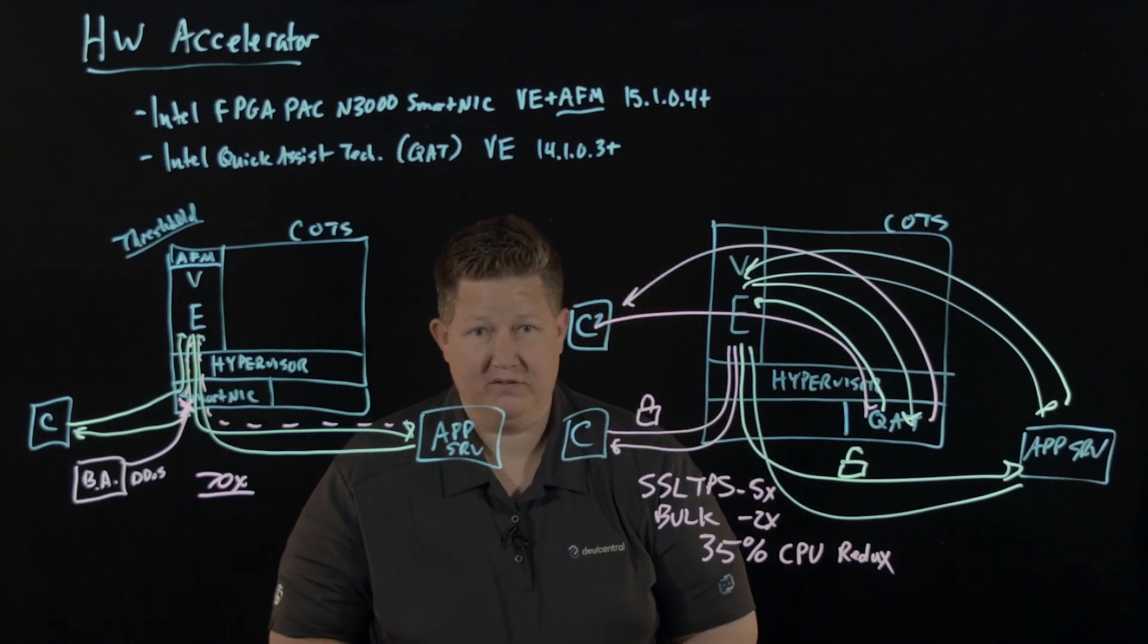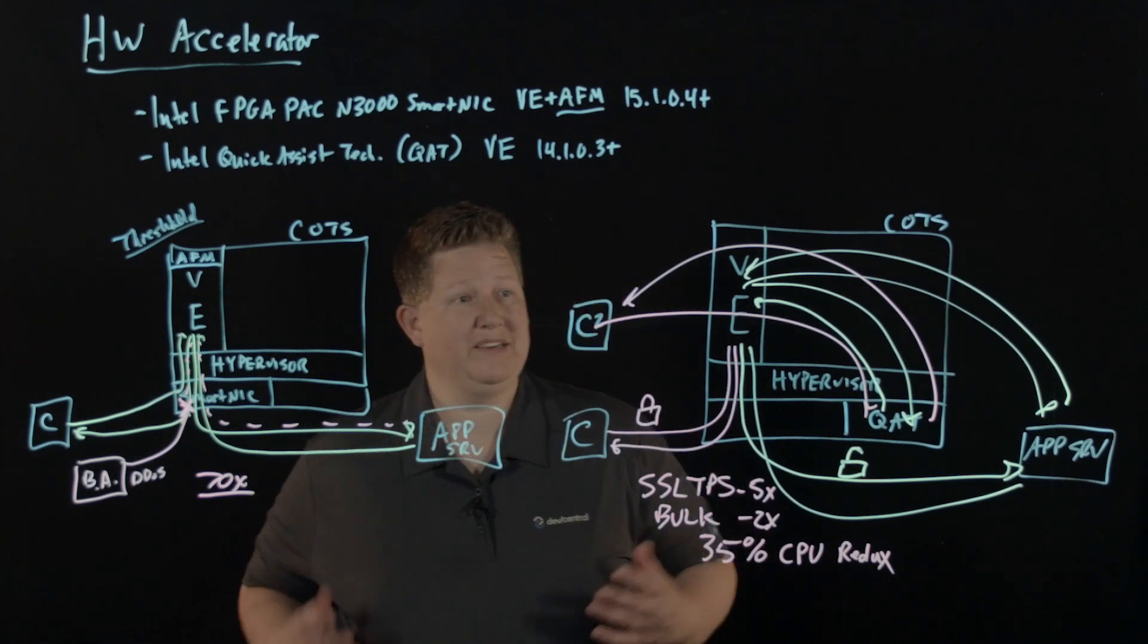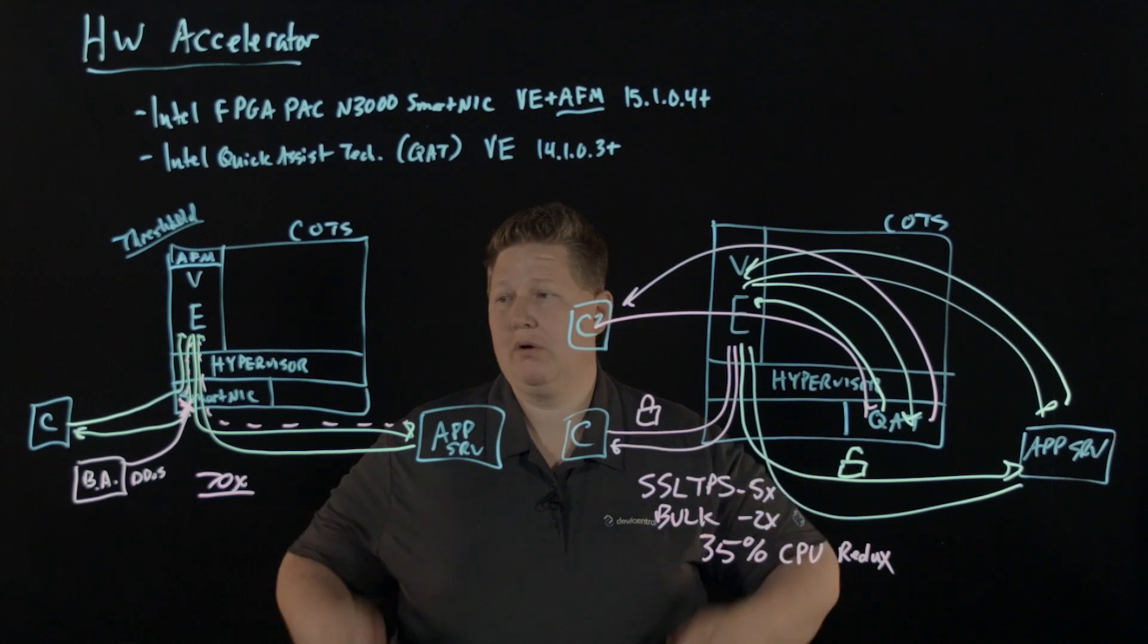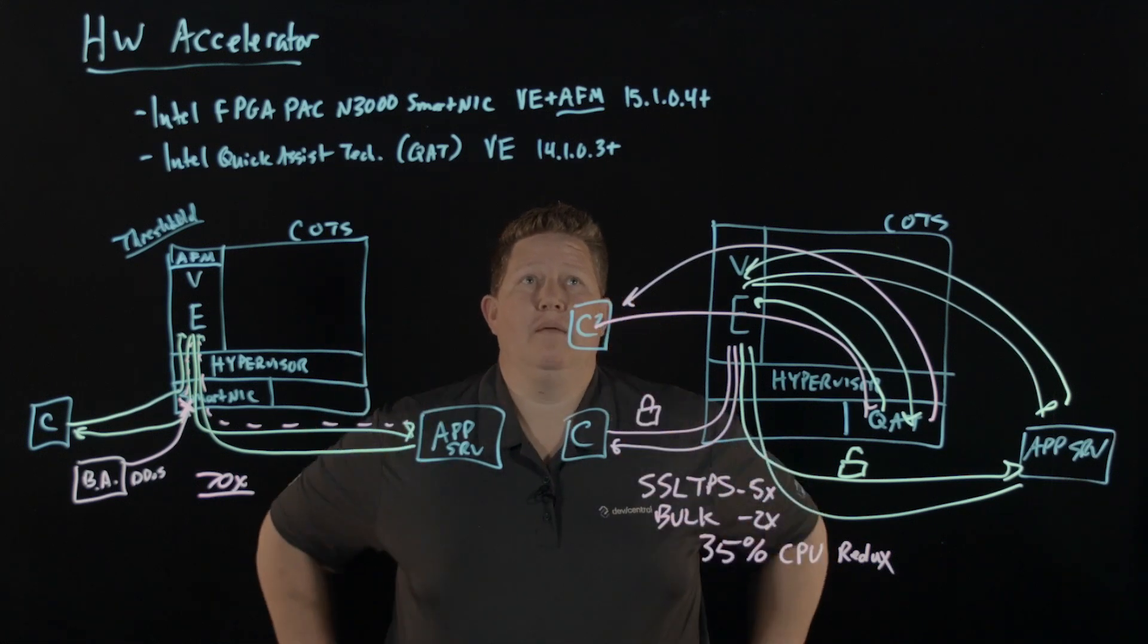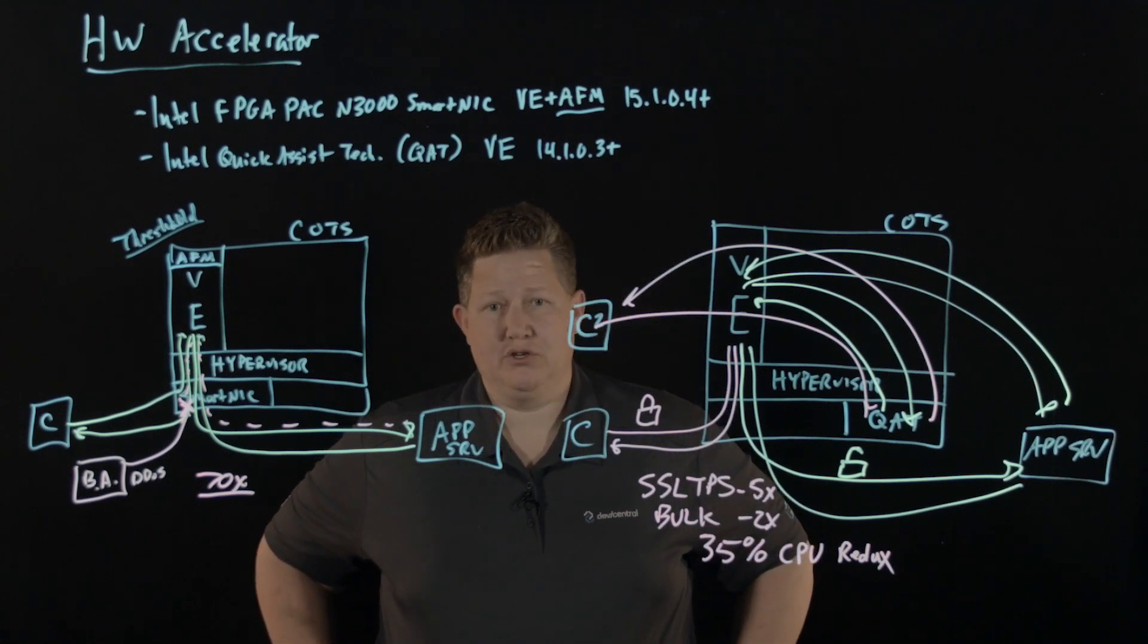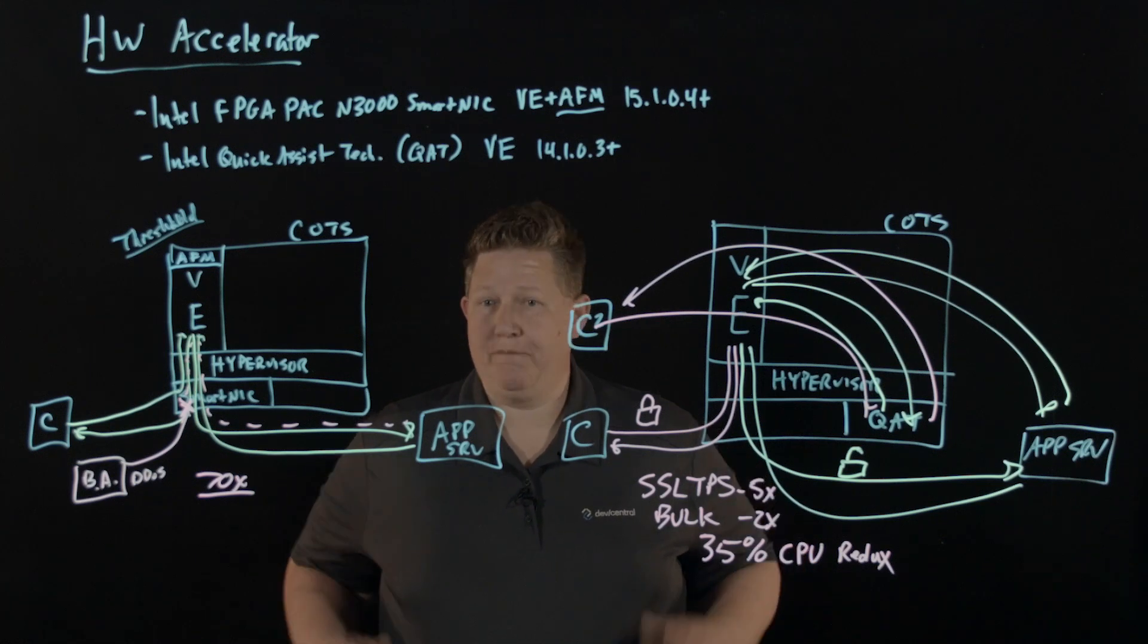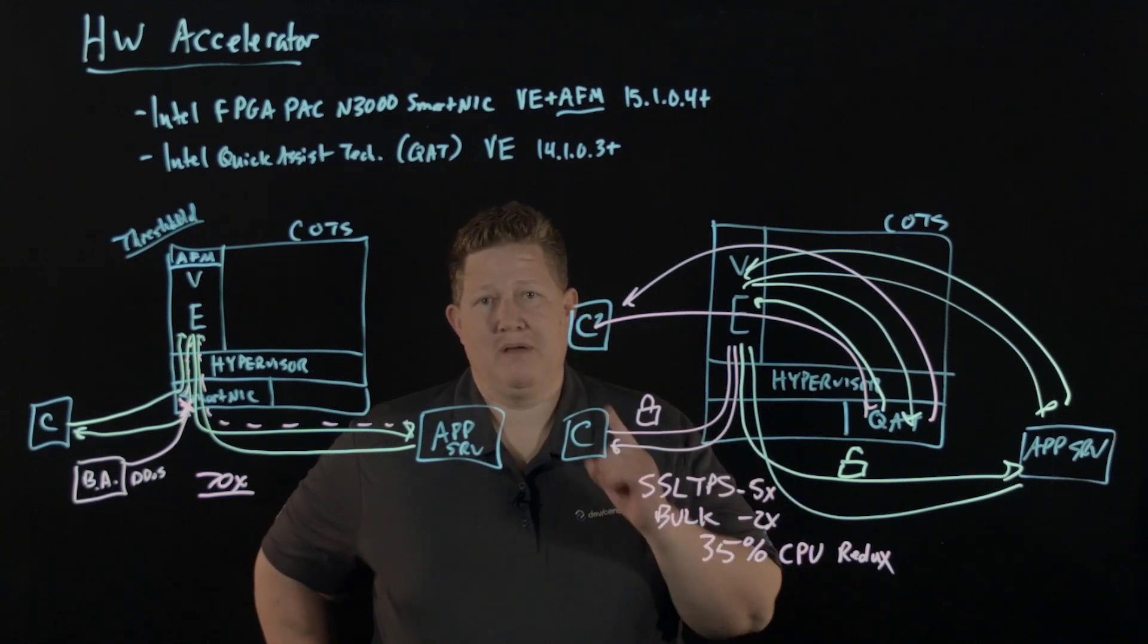And what that allows is about 35% CPU reduction, which allows BigIP VE compute resources to handle other things. So excellent solutions where you can take commercial off-the-shelf products, throw in some hardware acceleration technology with the right configuration of VE and modules and versions. And you got yourself a far more efficient solution on non-BigIP hardware. So hopefully this was interesting for you. It was interesting for me to learn and I hope you have a great day.